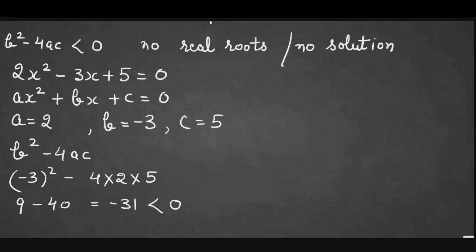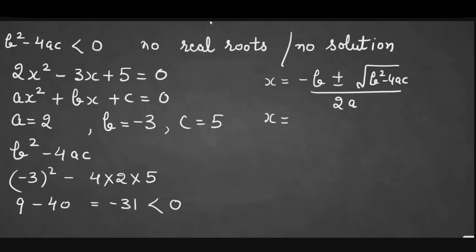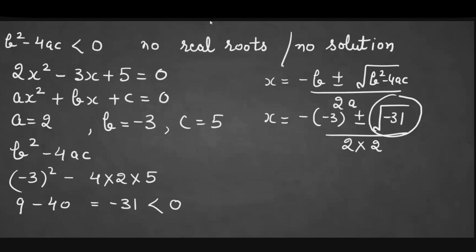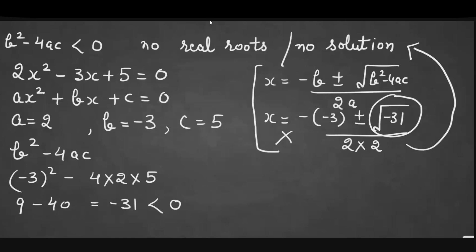If we try to use the formula x = (-b ± √(b² - 4ac)) / 2a, we get x = (3 ± √(-31)) / 4. Since we cannot calculate the square root of a negative number, we cannot solve it further. So when b² - 4ac is negative, you directly write: this equation has no real roots.